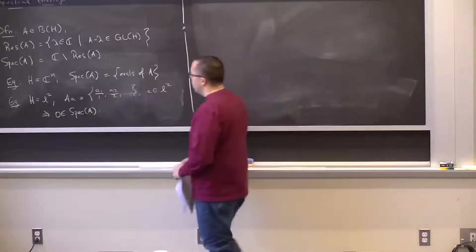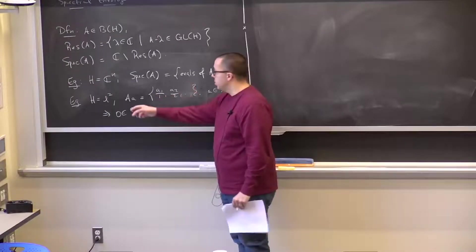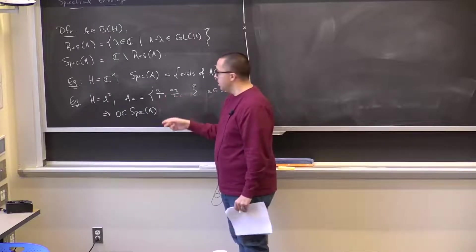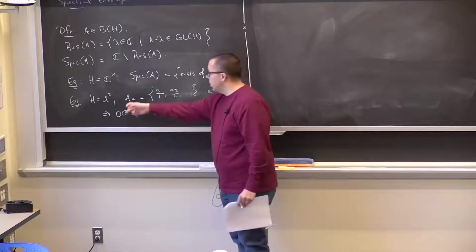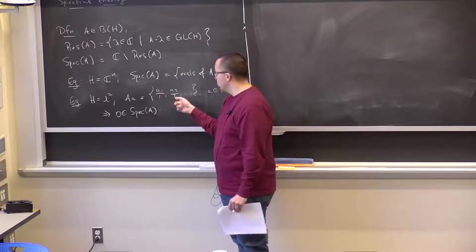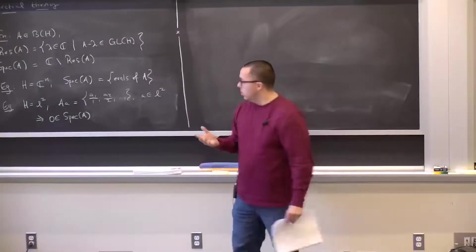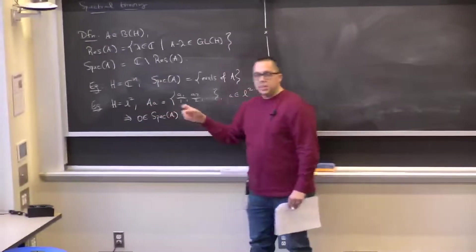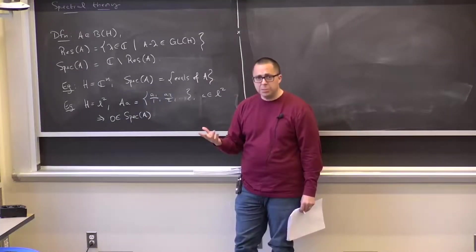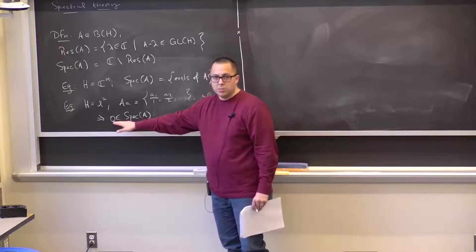Each standard basis vector eₙ, with 1 in the nth slot and 0 otherwise, is an eigenvector of A with eigenvalue 1/n. Since 1/n converges to 0, and the spectrum of a bounded linear operator is a compact—in particular, closed—set, 0 must also be in the spectrum.